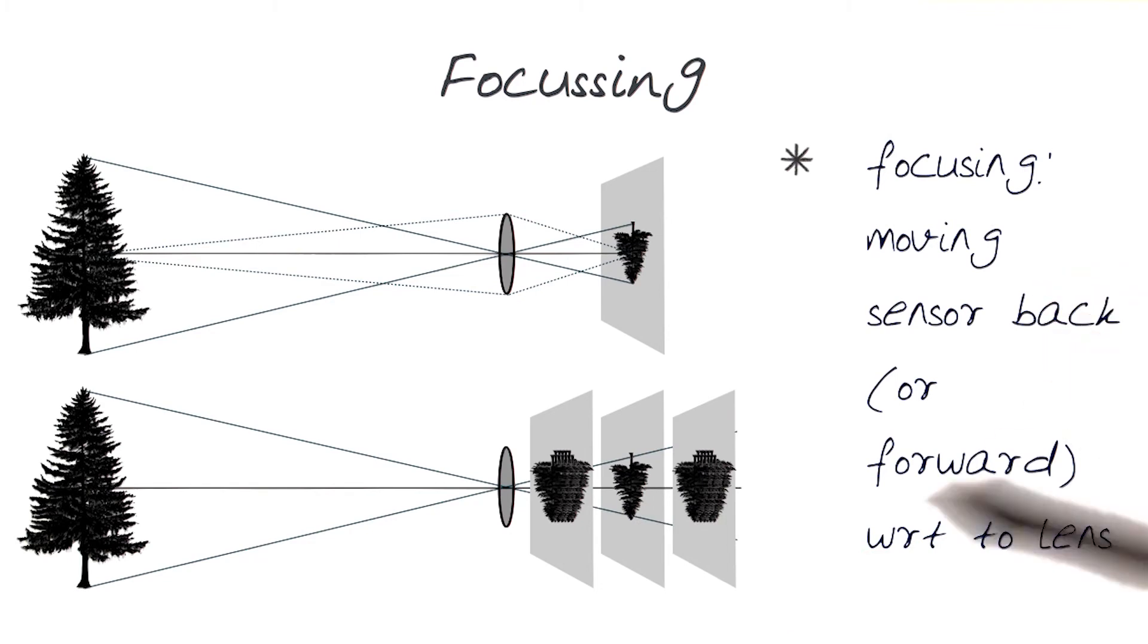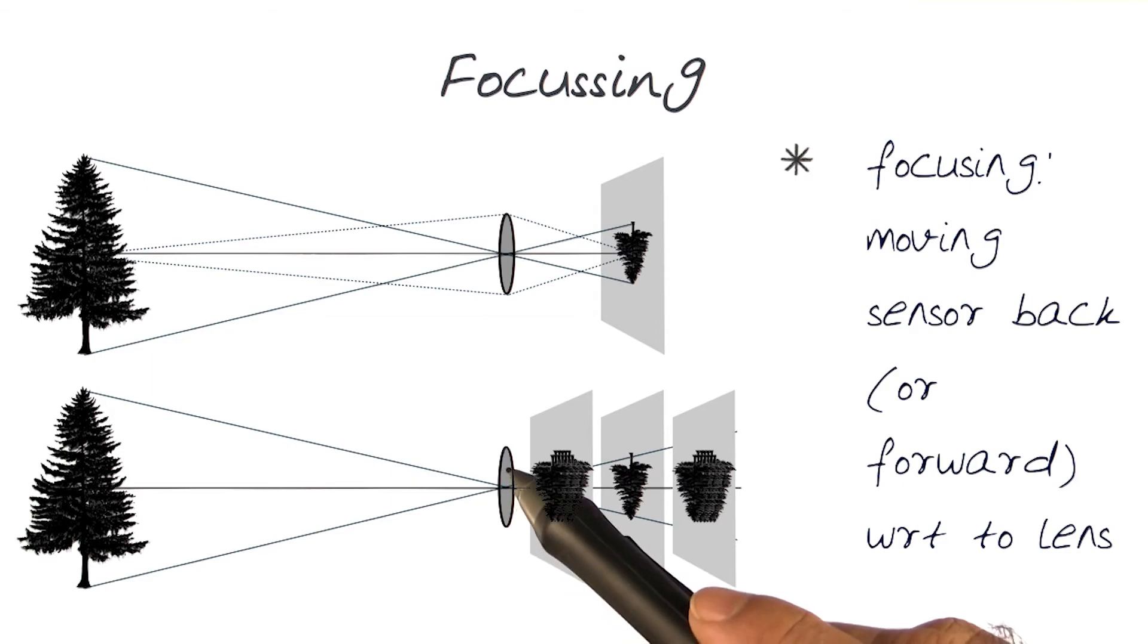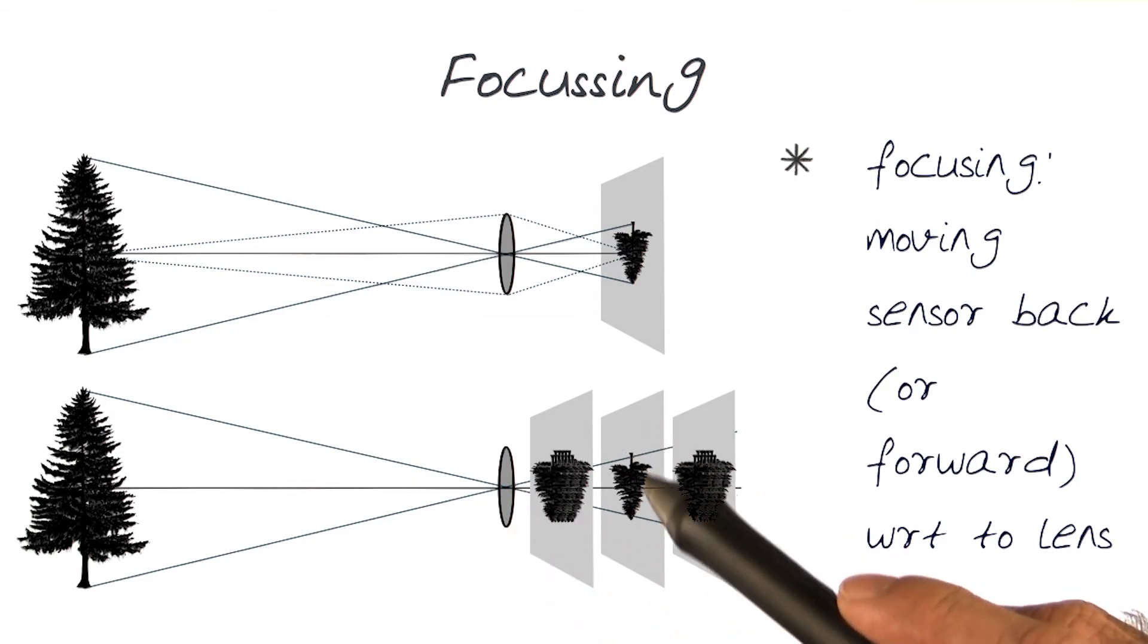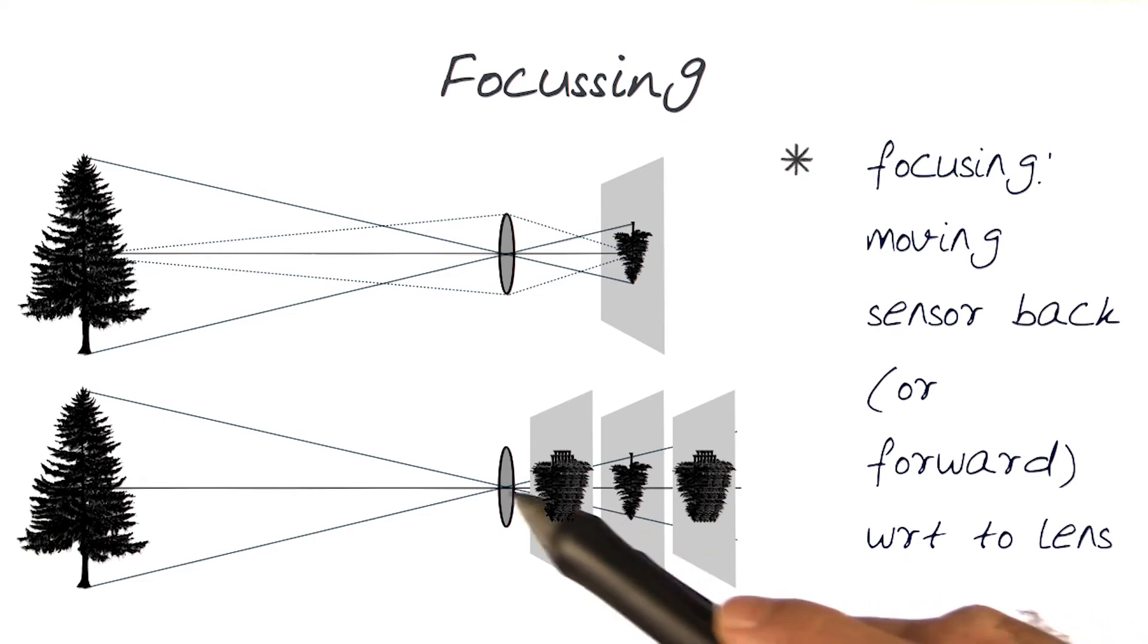Focusing is done by moving the sensor or lens in relationship to each other so that the distance between the lens and image plane is exactly aligned to where the focal plane for that lens would be.